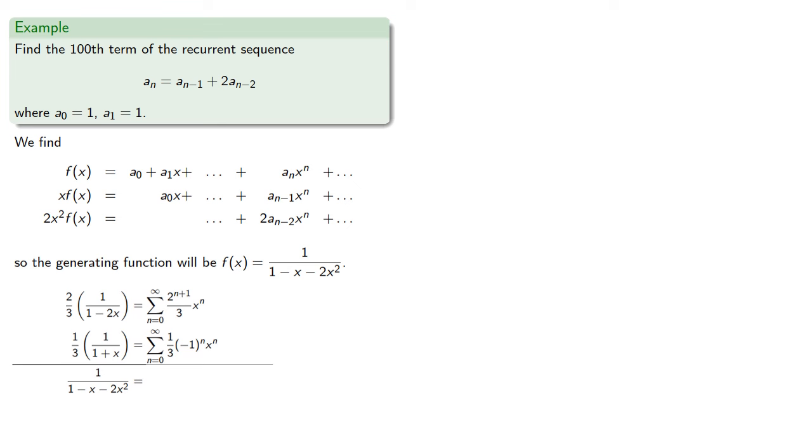So our generating function, expressed as a power series, gives us a closed form expression for our nth coefficient.